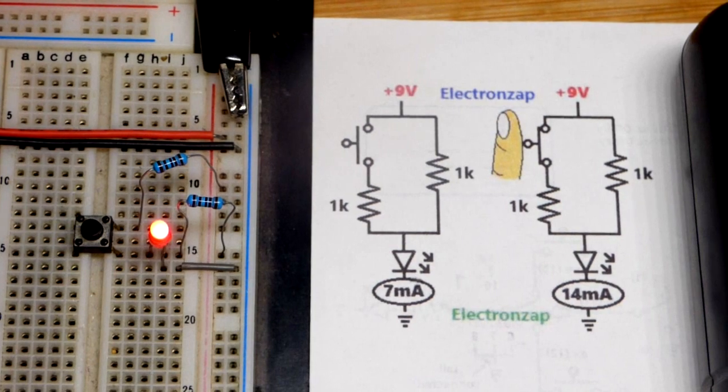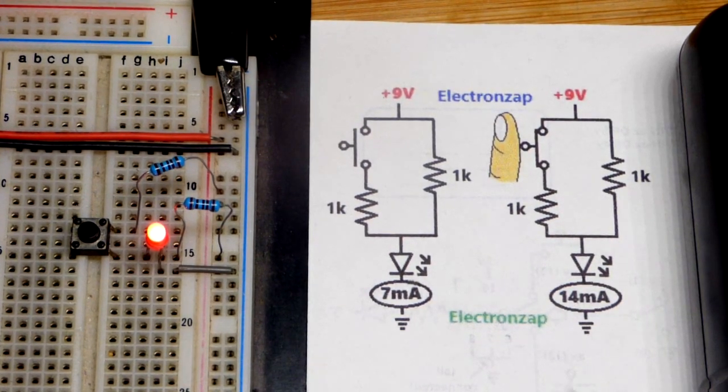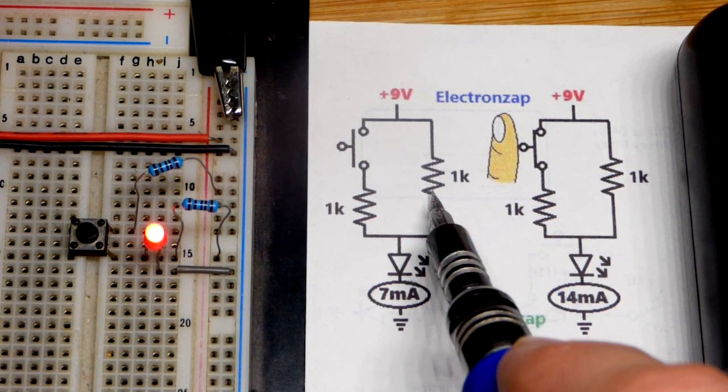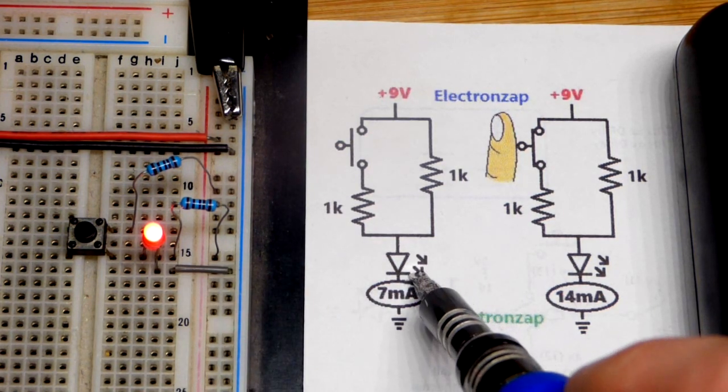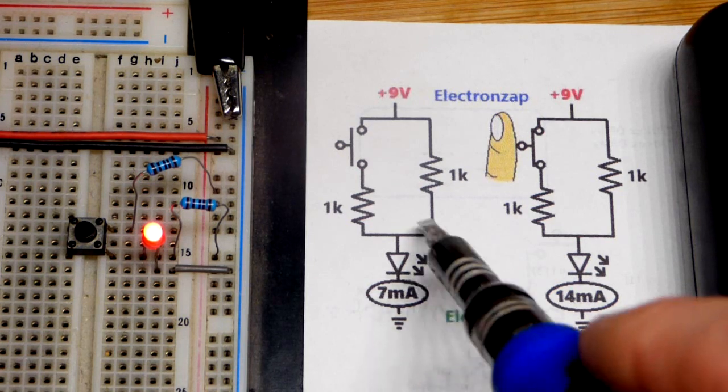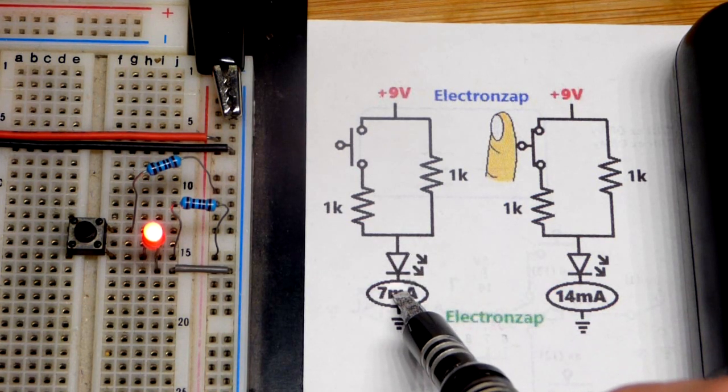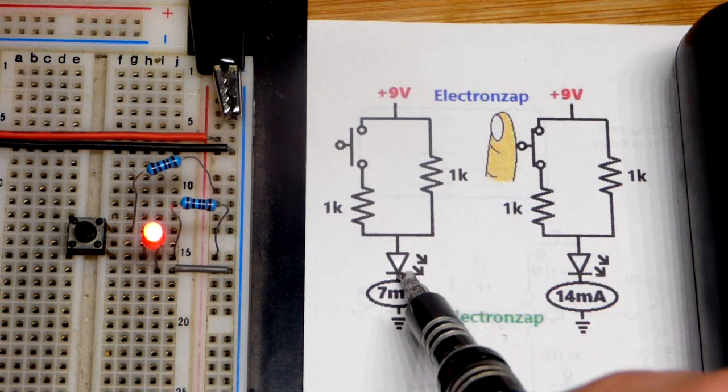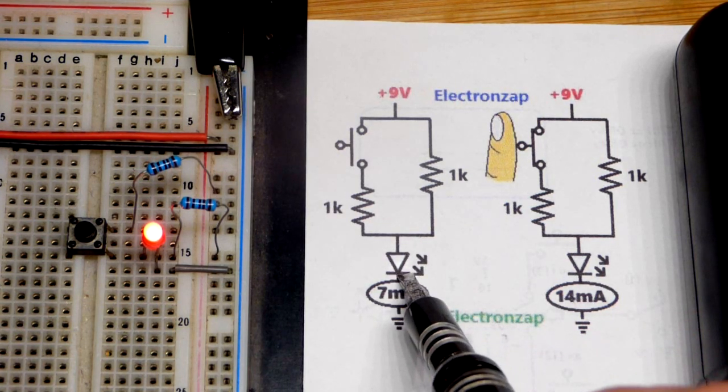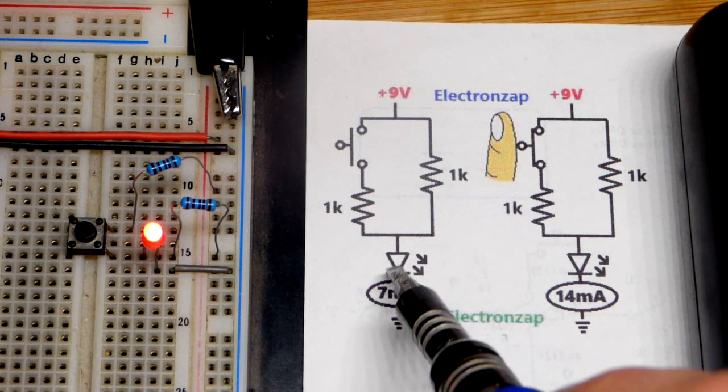We'll zoom back. This LED, 1k means 1000 ohms. These red LEDs drop about two volts. They don't conduct at all until you get about two volts across them, and then they do start conducting. It's not perfect two volts, it could be higher or lower depending on current, but it's pretty close.